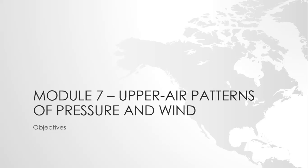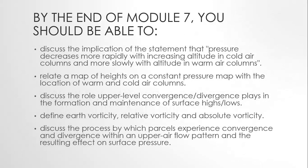The surface highs and lows that you studied in Module 6 are born, evolve, and diminish due to what's happening at upper levels of the atmosphere.